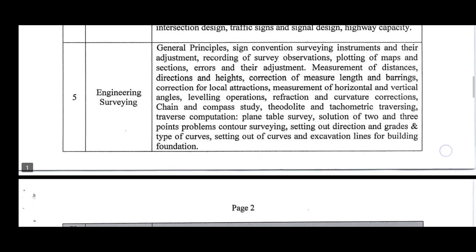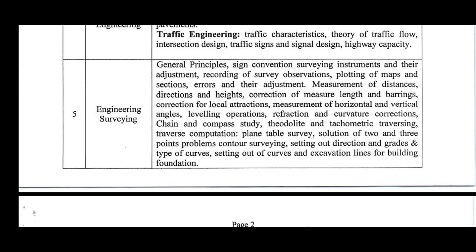Paper 2: Engineering Surveying — general principles, conventions, surveying instruments and their adjustment, recording of survey observations, plotting of maps and sections, errors and their adjustment, measurement of distances, directions and heights, correction of measured lengths and bearings, correction for local attractions, measurement of horizontal and vertical angles, leveling operations, refraction and curvature corrections, traverse computation, plane table survey, solution of two and three point problems, control surveying, setting out direction and grid, types of curves, setting out of curves, excavation lines for building foundation.